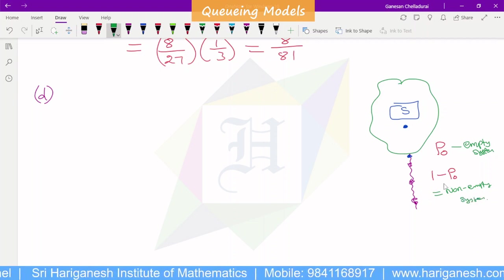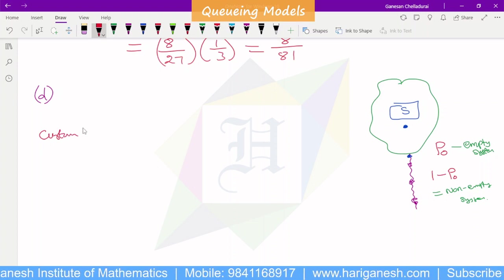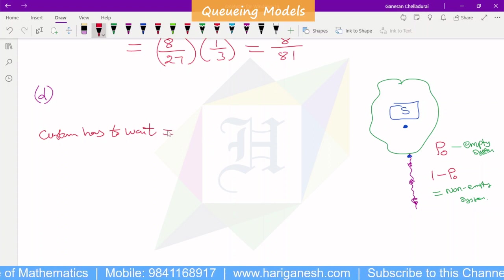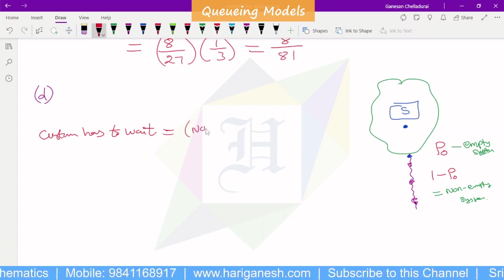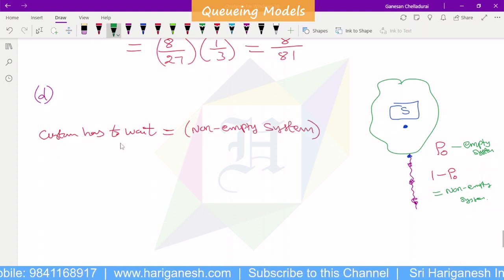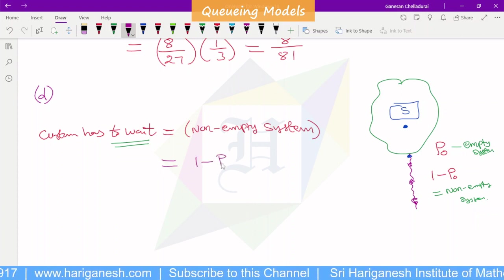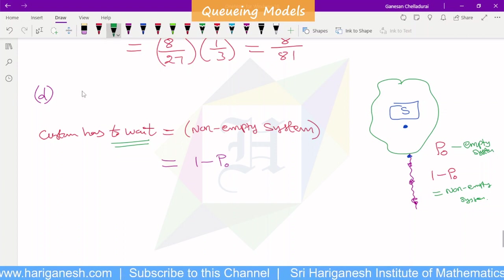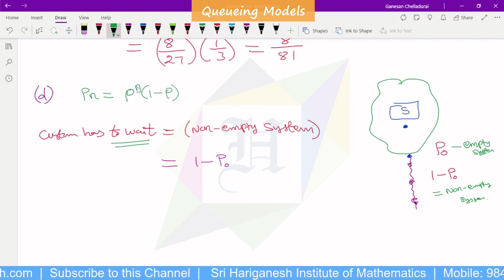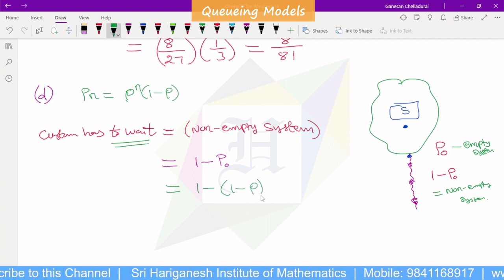So, this is the question. Probability of customer has to wait. That is why customer wait is possible only for non-empty system. That is possible. Customer wait is possible if system is non-empty, 1 minus P0. P0 is the formula. Pn is rho power n into 1 minus rho. P0, n is 0, rho power 0 is 1 into 1 minus rho. So, 1 minus P0, P0 is 1 minus rho. You can use direct formula. P0 value is 1 minus rho. P0 minus minus, minus minus is plus. Cancel and rho.